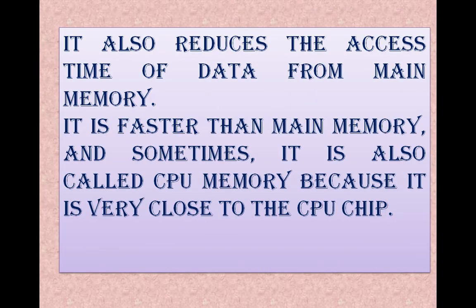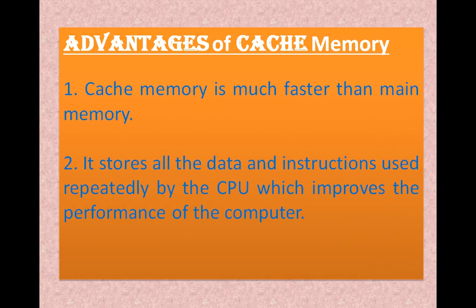It is also called CPU memory because it is very close to the CPU chip. So the main concept of cache memory is that it is used to make the CPU faster. It is used frequently and the access time is less. It is faster than the main memory. So I hope that the cache memory concept is clear.